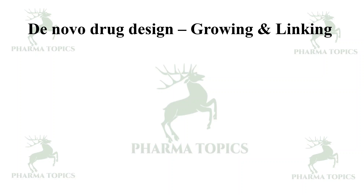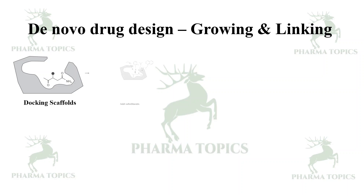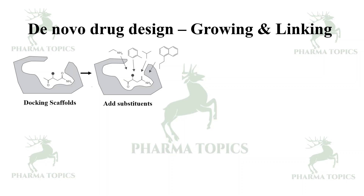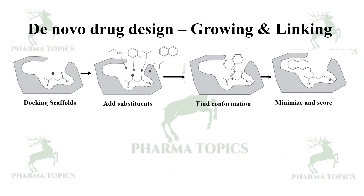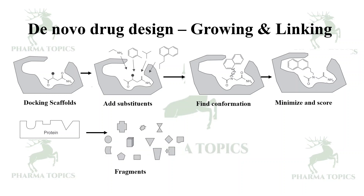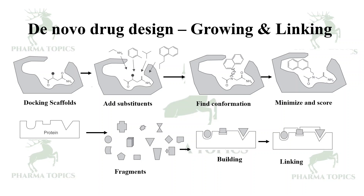The concepts used for fragment-based drug design include atom-based growing and linking. You first identify the docking scaffolds, then add substituents — functional groups such as OH, COOH, or ether groups — to perform substitution. You then find the best conformation, minimize the energy, and identify the docking score. The protein is aligned with the different fragments, a model is built, and the fragments are linked — this procedure is called de novo drug design.